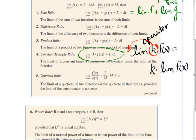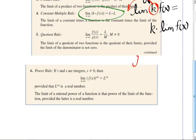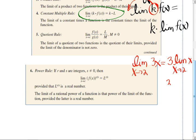If I take the limit as x approaches 2 of 3x, I can pull the 3 out and take the limit as x approaches 2 of x. So that's 3 times 2, which is 6. You're just going to substitute 2 in there—that's all there's going to be to it. But later on, you'll want to be able to pull the constants out.